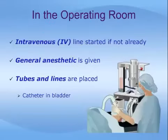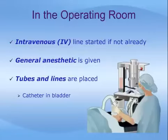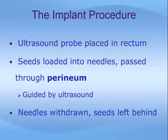Once in the operating room, an IV line will be started if not done already. You will then be put to sleep by the anesthesiologist and a breathing tube introduced. In some centers, the procedure is performed using spinal anesthesia given through a needle in the back, which freezes a patient from the waist down. Other tubes and monitoring lines may be placed, including a catheter into the bladder. Brachytherapy is usually performed under general anesthetic, which blocks pain and causes a deep sleep.